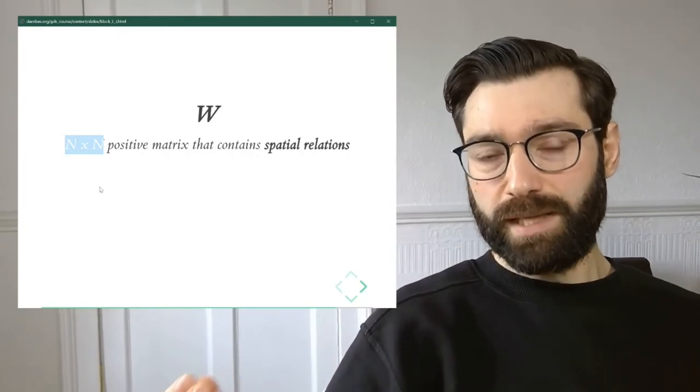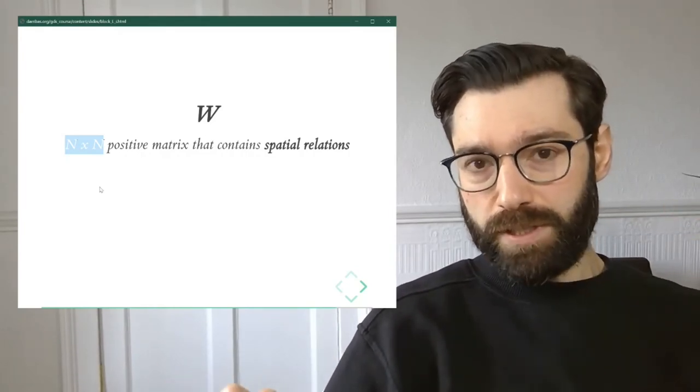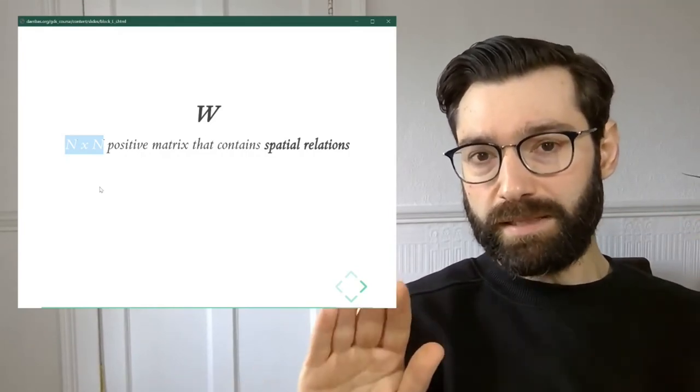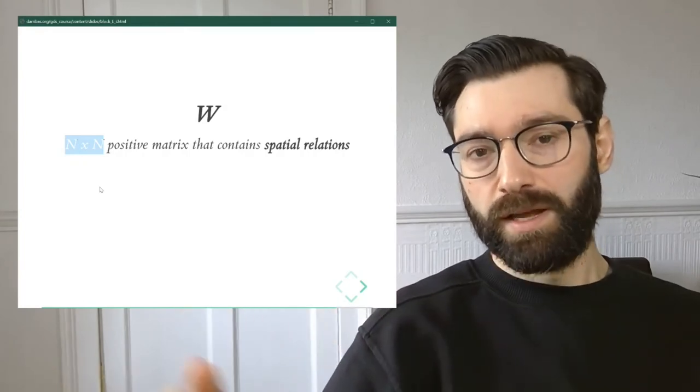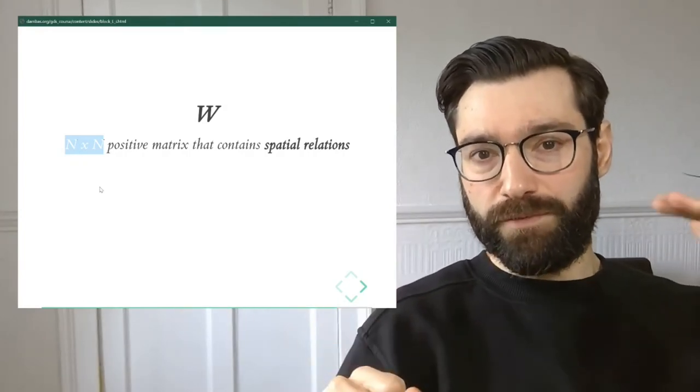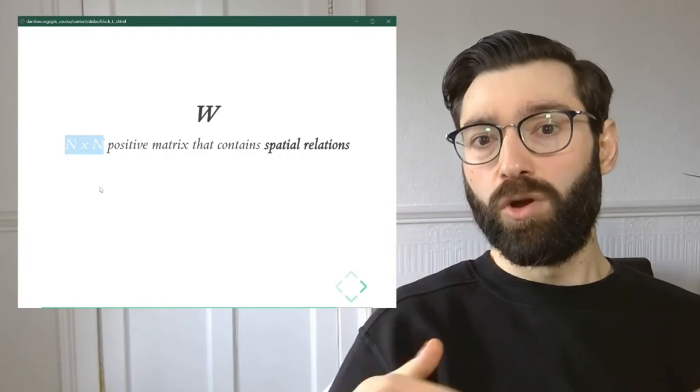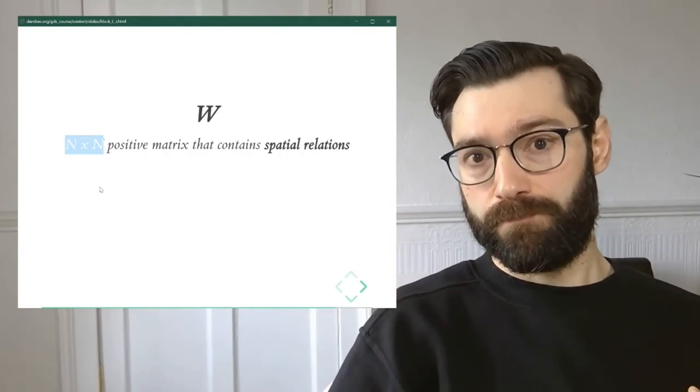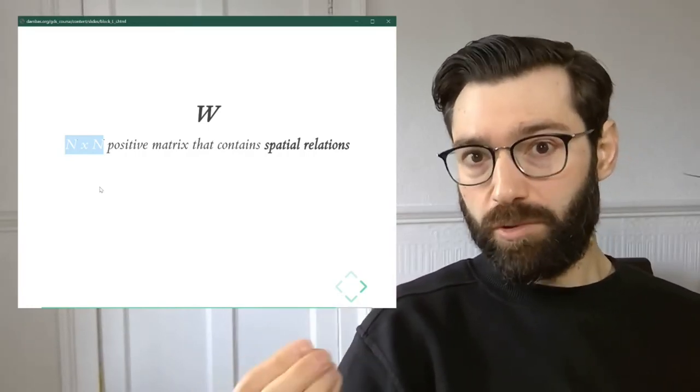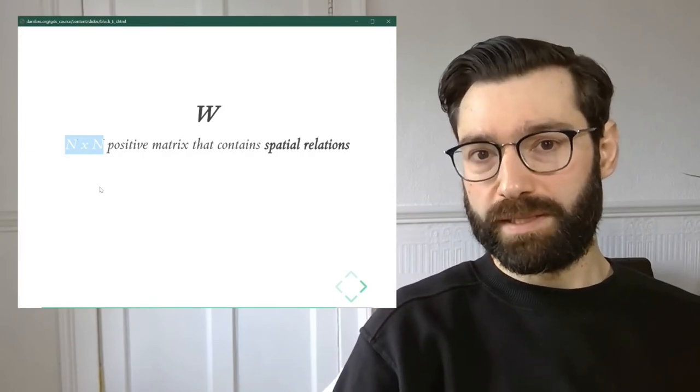So to give you an example, if the first observation in your data set is a neighbor of the second one, then the cell on the first row and the second column will be greater than zero. And if these two are not neighbors, then we'll put a zero on that cell.